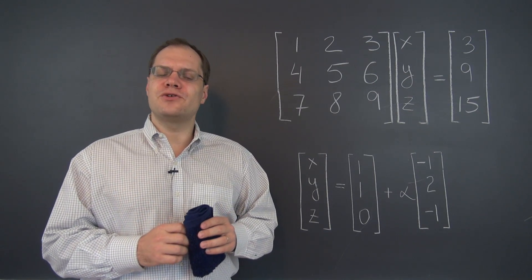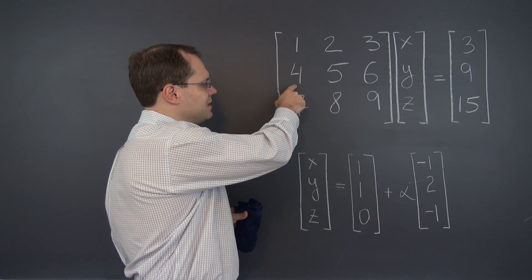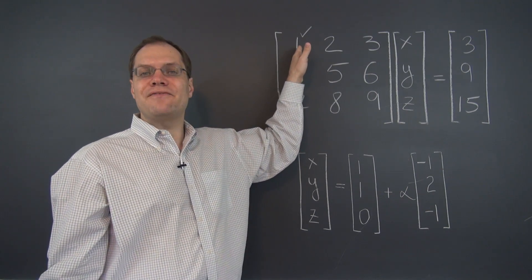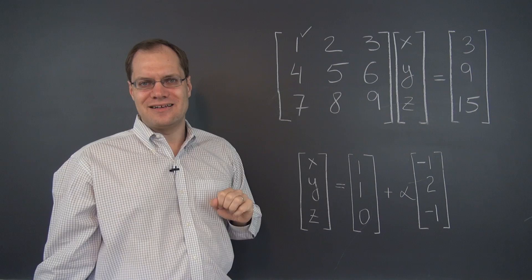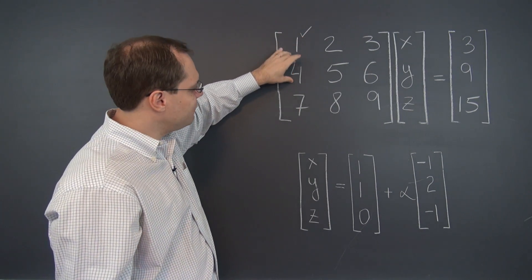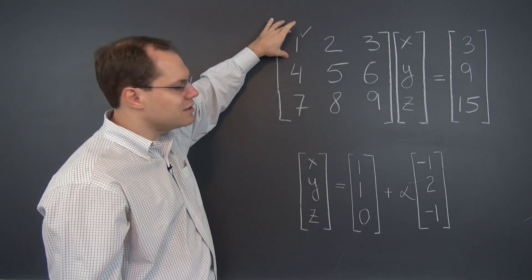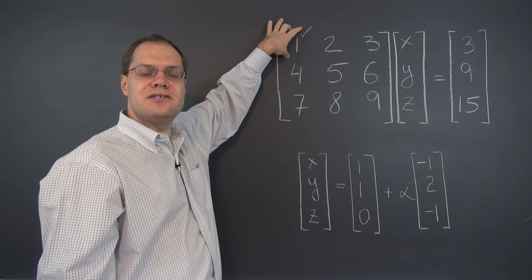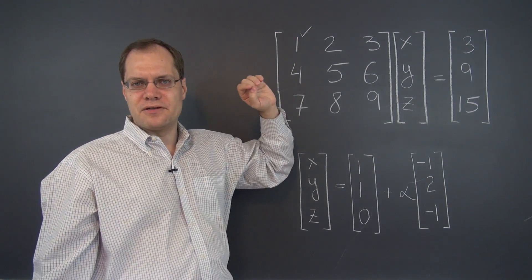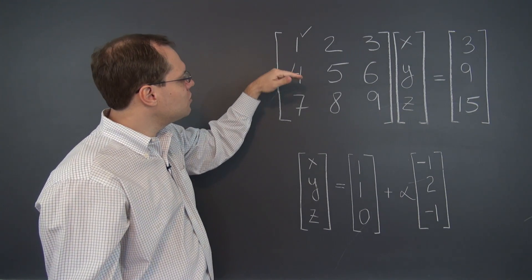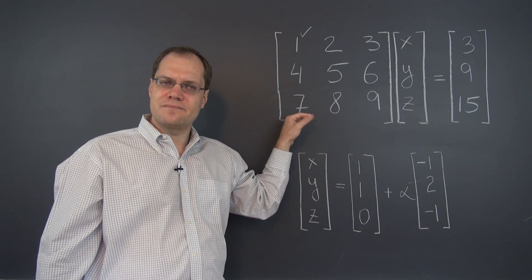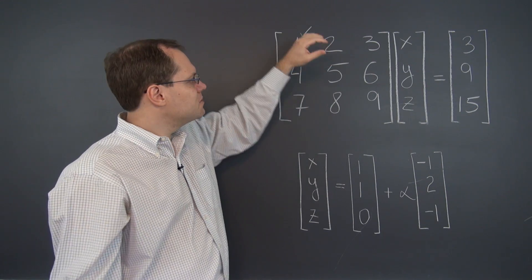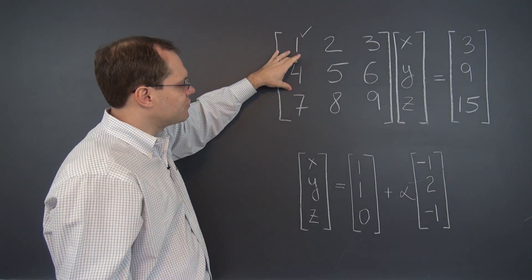Alright, what will be our first row operation? Let's try to eliminate this four. We will always try to use the topmost, leftmost number to do all of the eliminating. So we'll use one to eliminate the four and the seven below it. One is called a pivot, and we always use pivots to eliminate all other entries below and above the pivot. So we'll only worry about the four and the seven. In order to eliminate the four, we subtract four of the first row from the second.